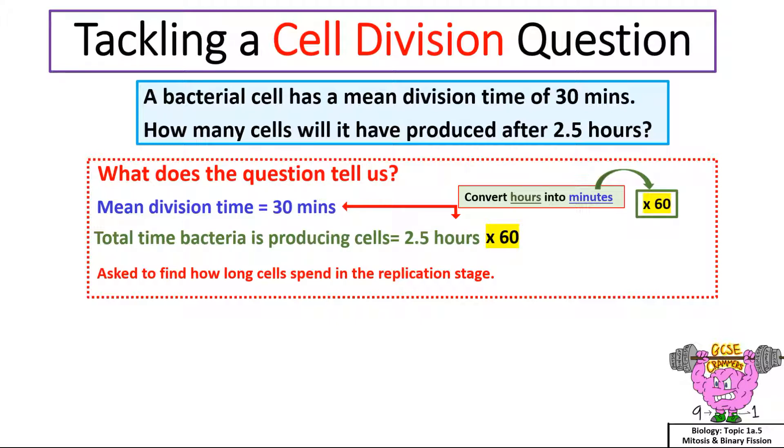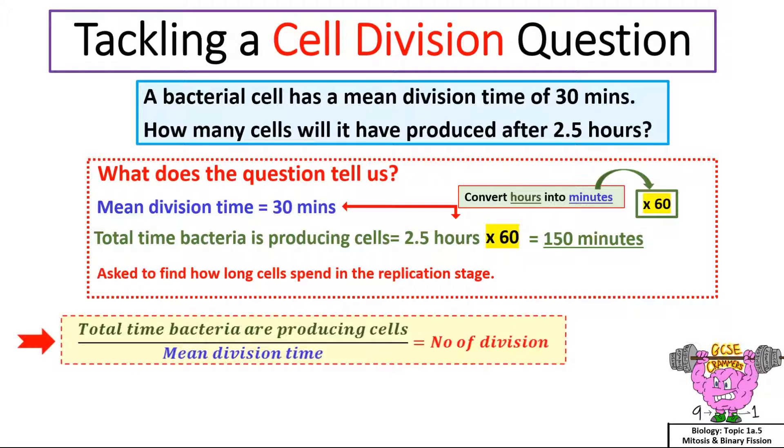And the total time bacteria is producing cells is 150 minutes. The equation for calculating the number of divisions is total time bacteria producing cells divided by the mean division time, and substitute with the figures: 150 divided by 30 equals 5 divisions.